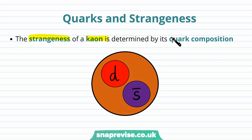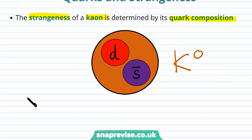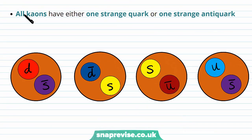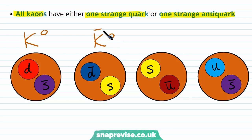The strangeness of a kaon is determined by its quark composition. For example, the neutral kaon has a quark composition of a down quark and an anti-strange quark — that's how we write the quark composition. All kaons have either one strange quark or one anti-strange quark. The antiparticle of the neutral kaon has its quarks swapped for their corresponding anti-quarks.